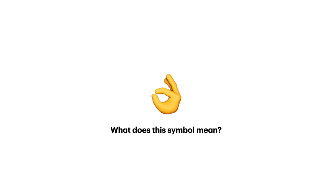We're going to begin with the hand gesture shown here — a hand gesture where the right hand has the thumb and index finger forming a circle. Take a moment and consider: what does this symbol mean? Are you familiar with it? If so, what context or contexts, and what meaning does this symbol have in those contexts?